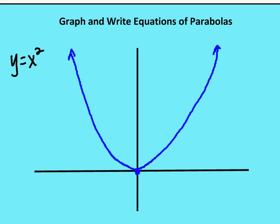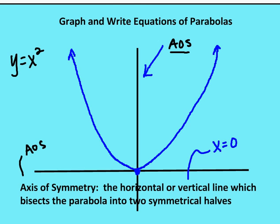Let's talk about some of the components of a parabola. First is what's called the axis of symmetry. The axis of symmetry is the line that bisects the parabola into two separate halves. With a vertex at the origin, the equation for the line that bisects the parabola is x equals zero.